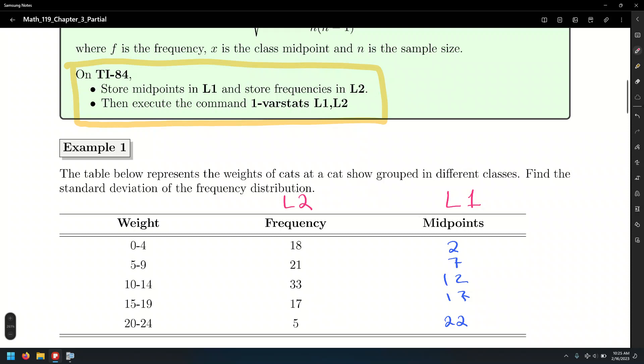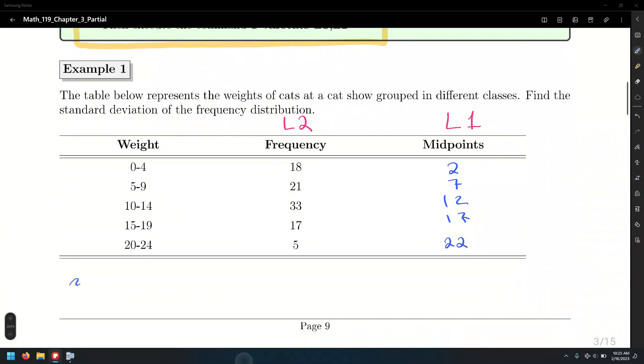They're not telling us a sample of cats from a cat show. So, we're considering the entire show as a population of all the cats in there. So, we're going to use the corresponding symbols, mu for the mean and sigma for the standard deviation.